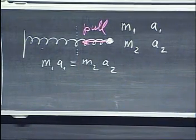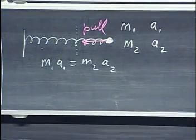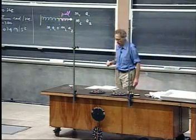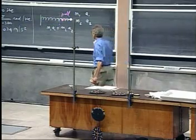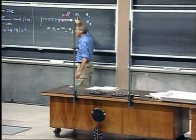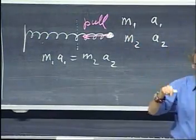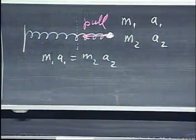And this product, m1*a1, we call the force. That is our definition of force. So the same pull on a ten times larger mass would give a ten times lower acceleration.